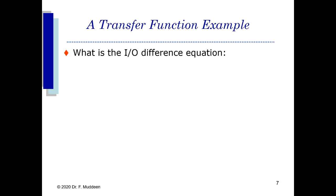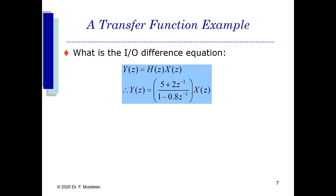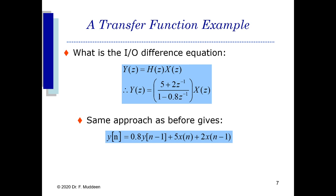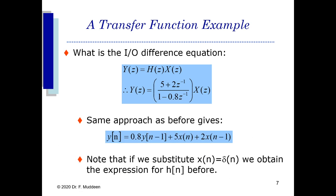The third form is the input-output difference equation. We express H(Z) in terms of Y(Z) and X(Z), where Y(Z) is our output and X(Z) is our input. The same approach as before gives us the difference equation. If we substitute x(N) equal to delta(N), we should get back the same h(n) equation we saw previously.